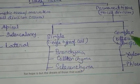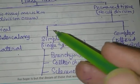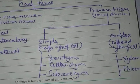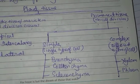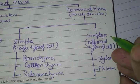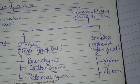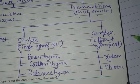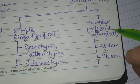It is simple and complex. Simple means the tissues will be made up of single type of cell. This simple permanent tissue is made up of single type of cell. Complex is made up of different kind of cells. Do you understand?